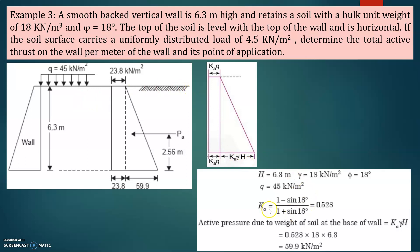First, let us calculate Ka since we need to find the active earth pressure. Ka equals 1 minus sin phi divided by 1 plus sin phi. With phi equal to 18 degrees, substituting gives Ka equal to 0.528. Total height H is 6.3 meters and gamma is 18 kilonewton per meter cube. Now calculating pressure at the base of the wall due to the soil: Ka times gamma times H equals 0.528 times 18 times 6.3, giving 59.9 kilonewton per meter square.